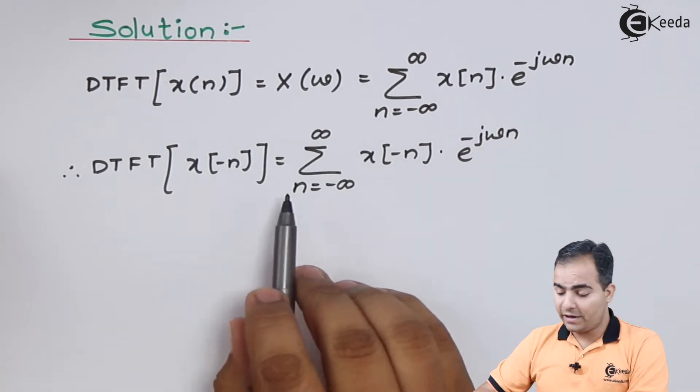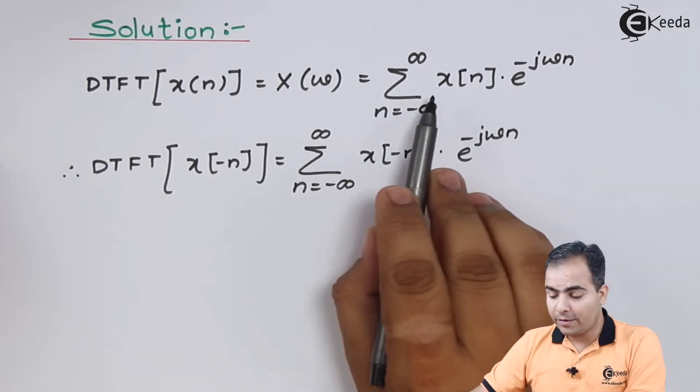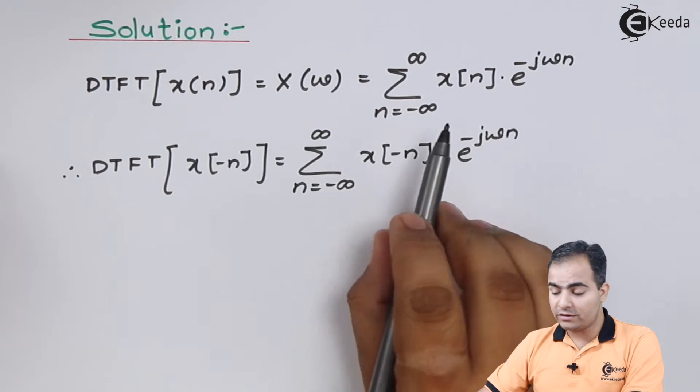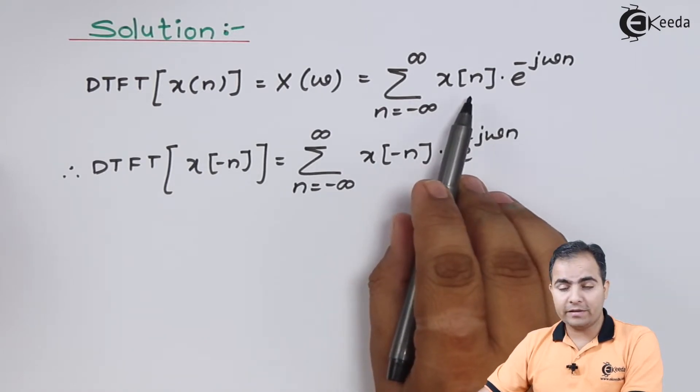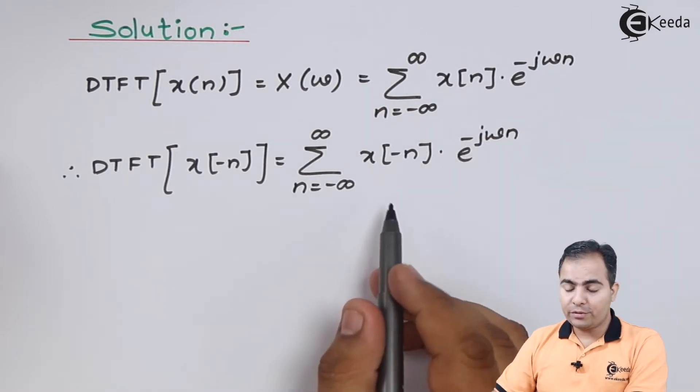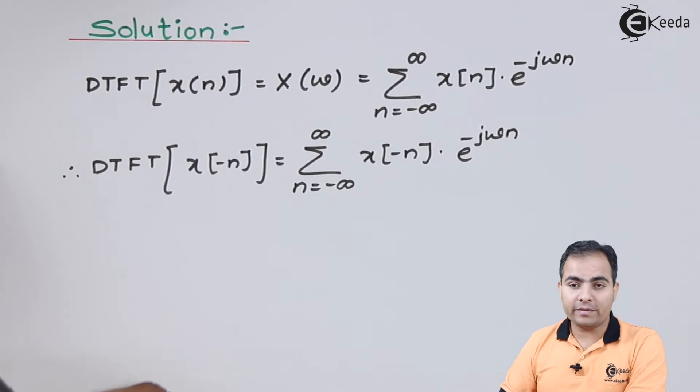Now we cannot apply the DTFT formula or definition on this equation because we want a pure form of x of n. We don't want any sign, any constant which is multiplied or divided with n, or any constant value which is added or subtracted from n. So what I'm going to do is replace or substitute minus n by some different variable, so let's say